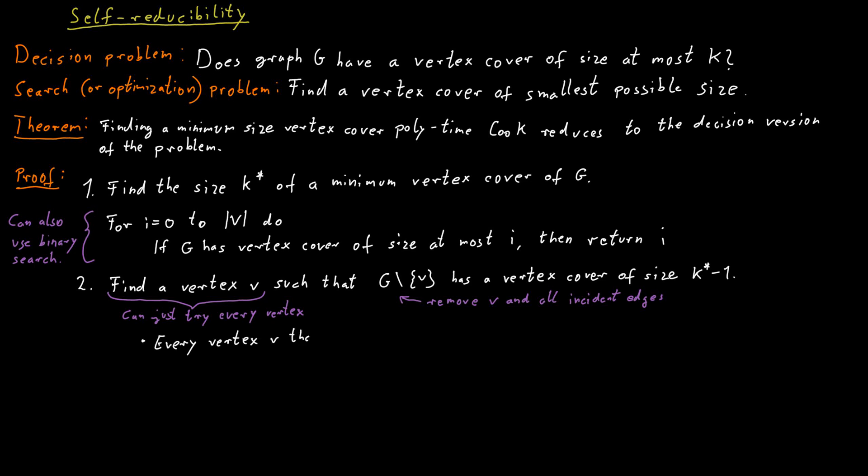And the reason is that any vertex that is part of a minimum vertex cover will have this property. Suppose you have a graph G. You have this minimum vertex cover of size k star in the graph that we want to find. Now, if we remove a vertex that belongs to this vertex cover, then the vertex cover that is left, or the other vertices in the vertex cover, there will only be k star minus 1 of such vertices. And they will form a vertex cover of the remaining graph once we remove this vertex v.